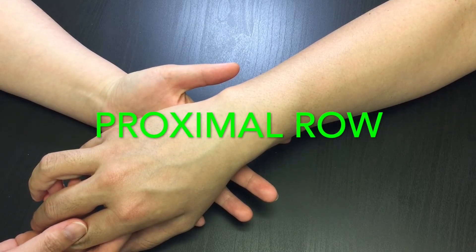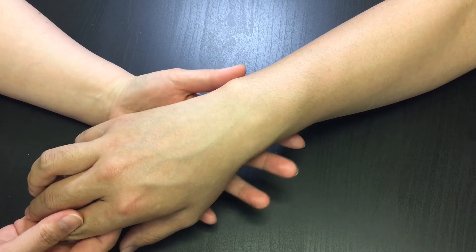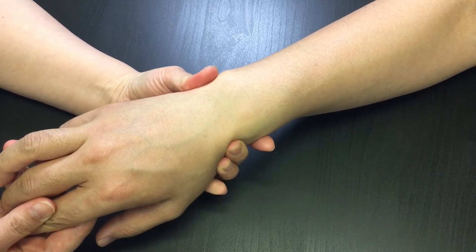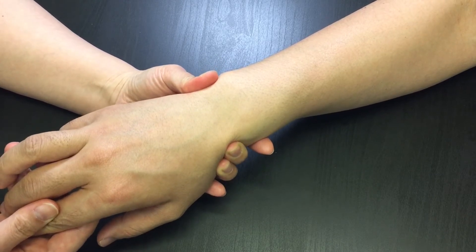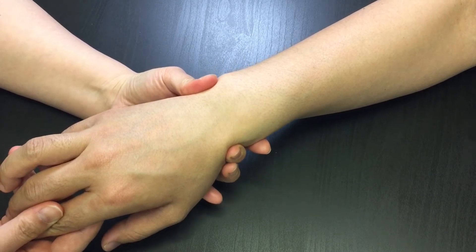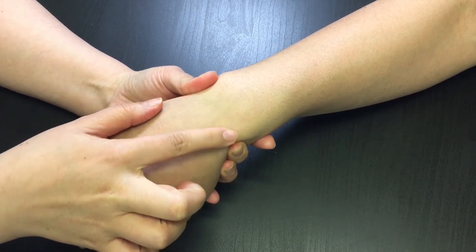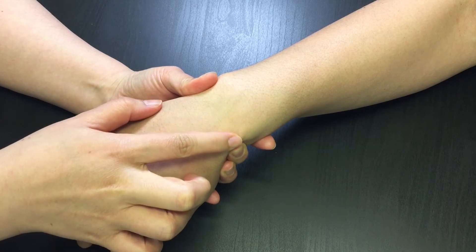We are going to locate the proximal row of carpals from lateral to medial. First, locate the styloid processes of radius and ulna and slide your finger just distal. Your fingers sink into the soft tissue at wrist joint now. That's where the proximal row of carpals are located.